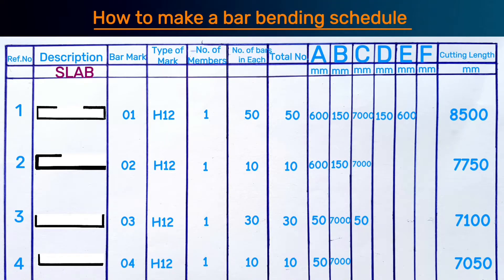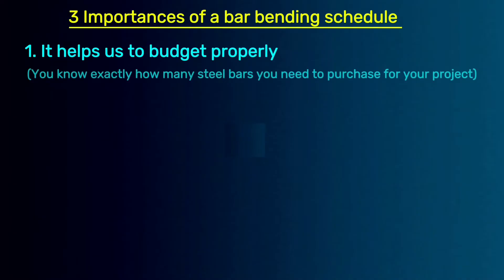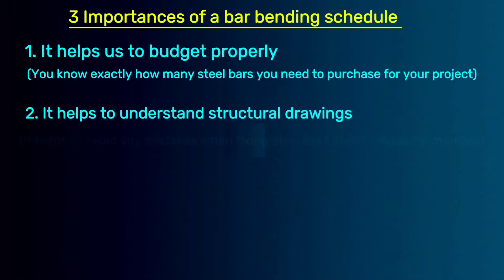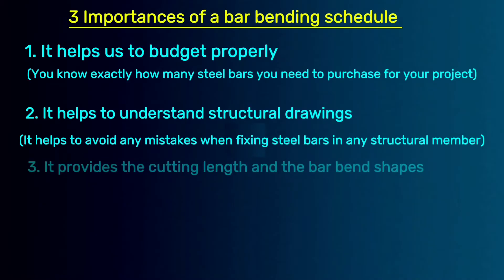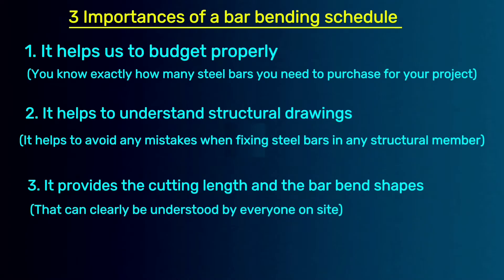Learning how to make a bar bending schedule is the most important skill that every civil engineer and quantity surveyor should know. It essentially helps us to budget properly and know exactly how many steel bars you need to purchase for your project. You understand structure drawings properly in detail and that helps you to avoid any mistakes when fixing steel bars in any structure member, and also provides the cutting length and the bar bending shapes that can clearly be understood by everyone on site.